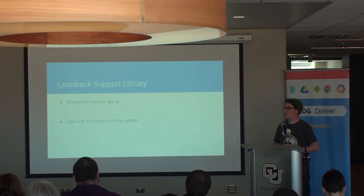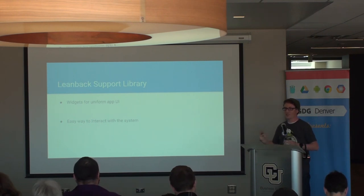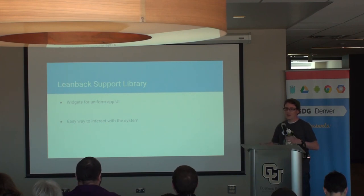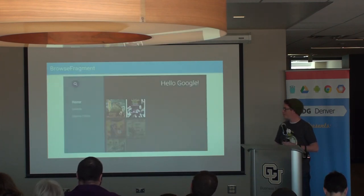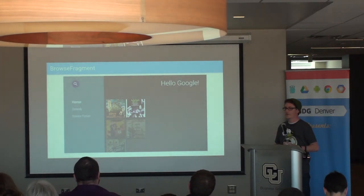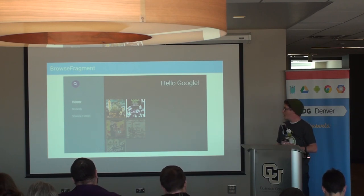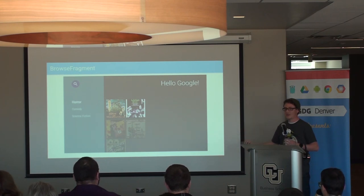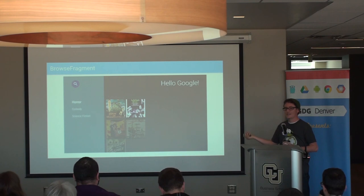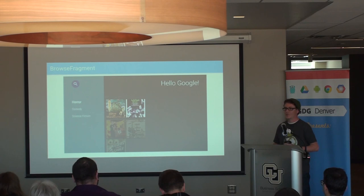Starting with media apps, Google provides the Leanback Support Library, which gives you a whole bunch of widgets and components for a standard UI, as well as a way to interact with the system for global search, recommendations, and so forth. The first component is the Browse Fragment, which when you first open your application provides the list of lists. You can have categories, display your content, a fast lane navigation drawer on the side, and a search orb in the top left corner. You can put up banners and titles to brand your application.